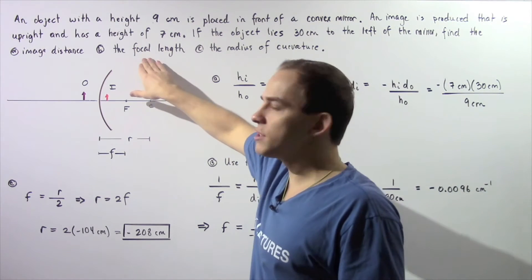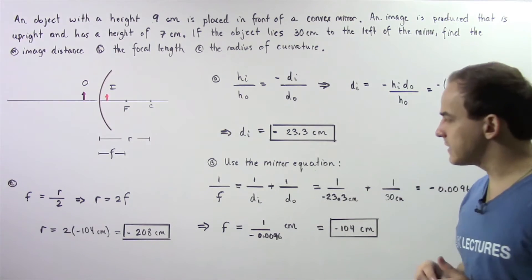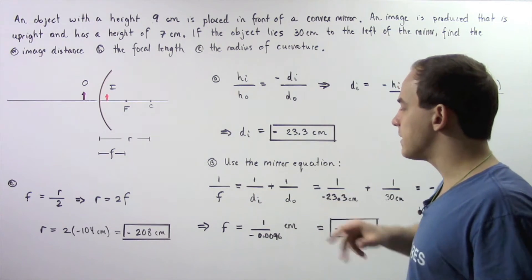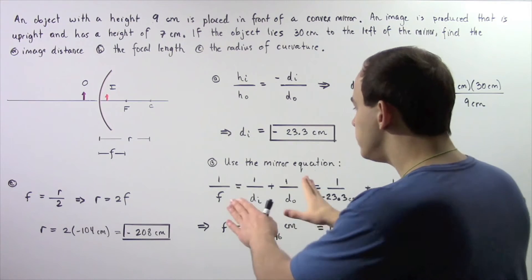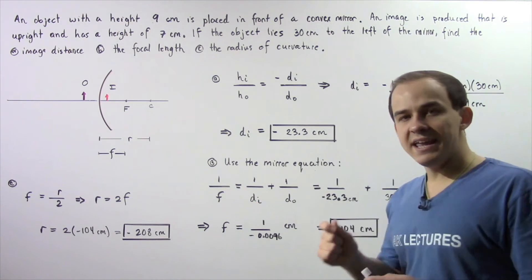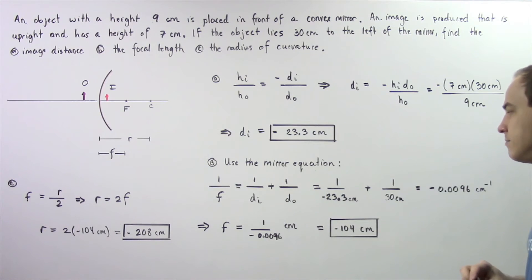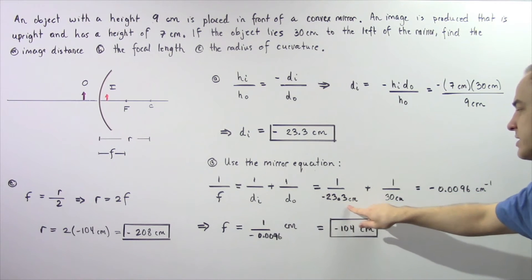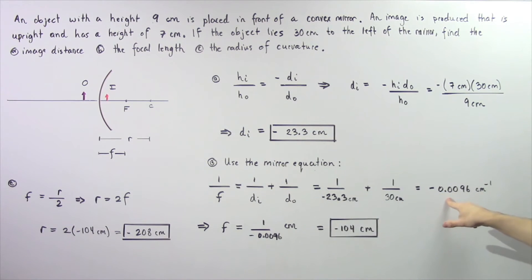For Part B, we use the mirror equation to calculate the focal length. Recall the mirror equation: 1 divided by the focal length equals 1 divided by the image distance plus 1 divided by the object distance. We know the image distance is negative 23.3 centimeters and the object distance is 30 centimeters. So 1 divided by negative 23.3 plus 1 divided by 30 gives approximately negative 0.0096 cm⁻¹.